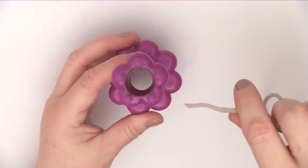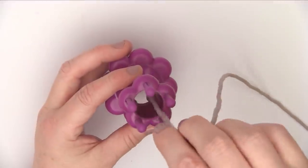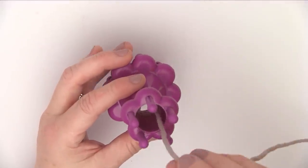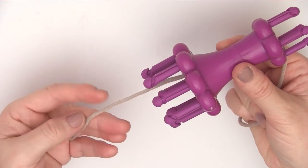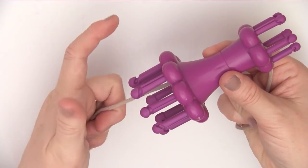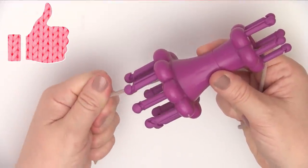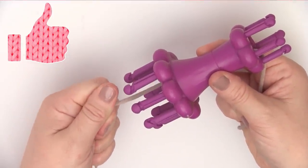So to begin, we simply place our yarn down the center of the loom and make sure to hold on to the yarn tail securely throughout this entire process. And if you are excited to learn how to knit on a loom, please hit like and make sure to subscribe.